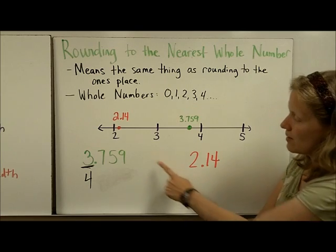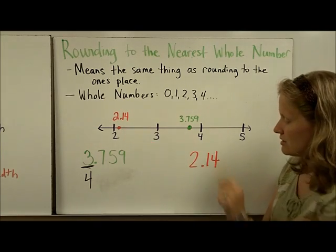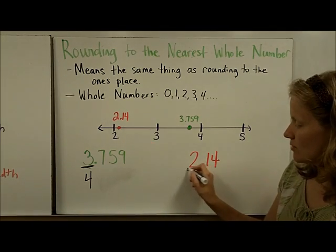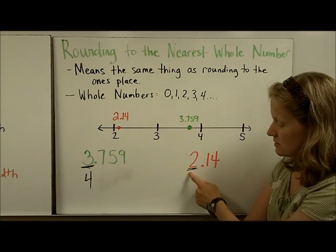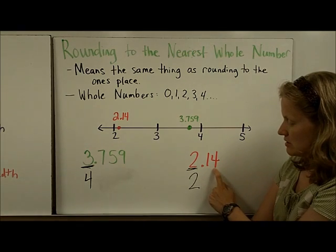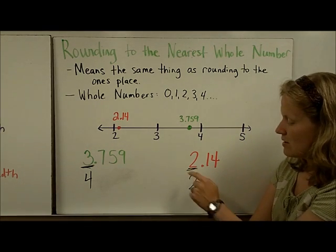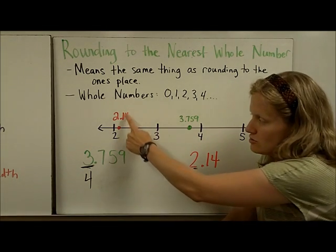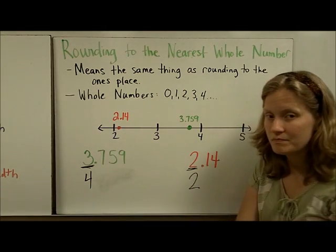Same thing here. Here is 2.14. I'm going to round to the nearest whole number, which is the ones place. This one tells the two to stay the same. I would then have decimal and zeros here, but I can erase them. So the nearest whole number to 2.14 is just two.